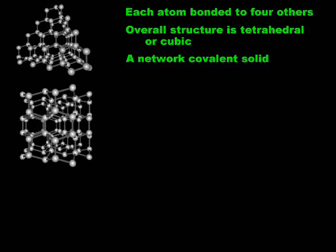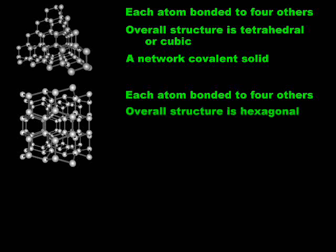Lonsdaleite is the hexagonal form of diamond. As in diamond, each carbon atom is connected to four others in a tetrahedral arrangement. However, these tetrahedra are arranged to give a hexagonal or six-sided structure. Like diamond, Lonsdaleite is a network covalent solid.